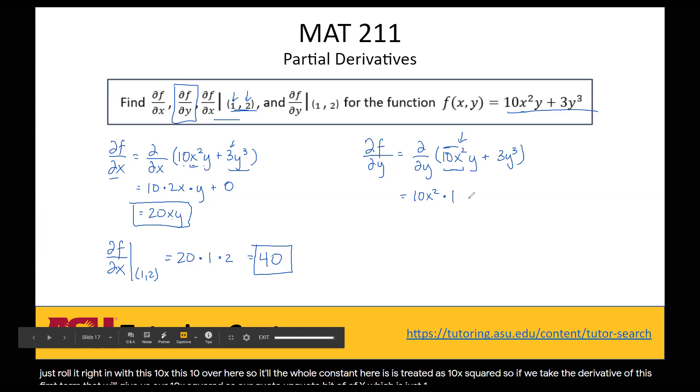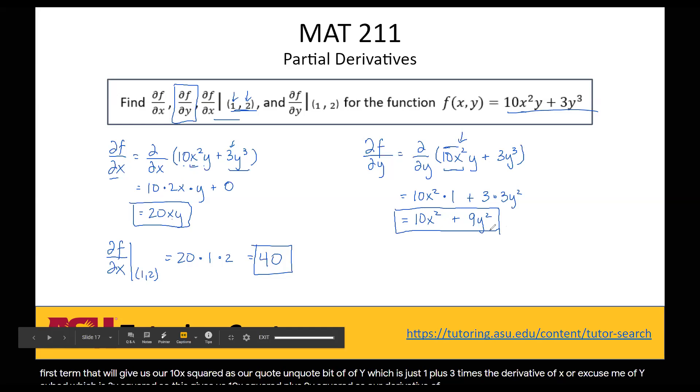Plus 3 times the derivative of y cubed, which is 3y squared. So this gives us 10x squared plus 9y squared as our derivative of f with respect to y.